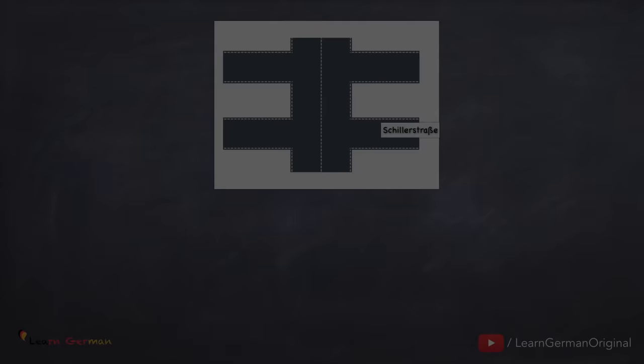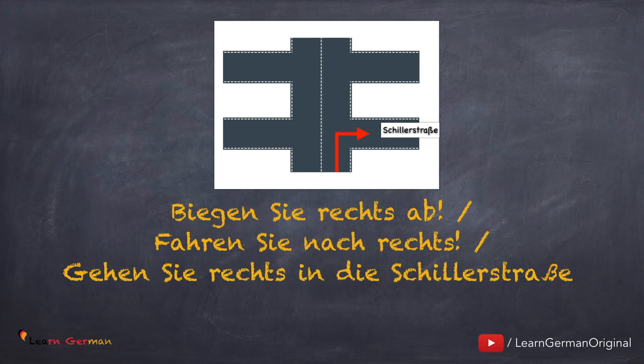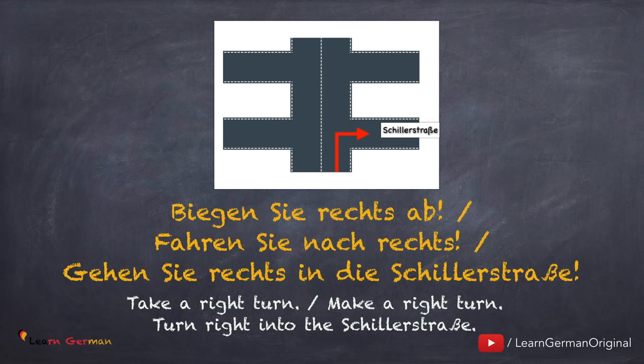Similarly, the next one: 'Biegen Sie rechts ab' or 'Fahren Sie nach rechts.' And if you know the name of the street you can say: 'Gehen Sie rechts in die Schillerstraße.' You might have noticed that all the sentences are in Imperativ.